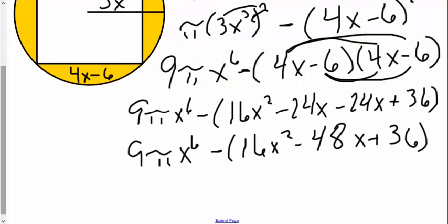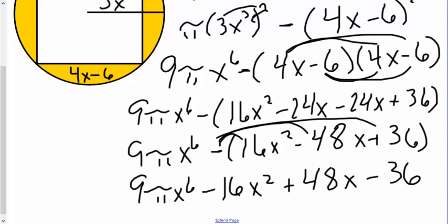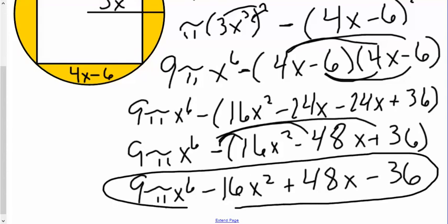Now I just need to distribute my negative, so 9 pi x to the 6 stays, that becomes a negative 16x squared, a positive 48x, and then a negative 36. From here I realize there's no GCF or anything I can factor out, and nothing I can combine either, so this is my final answer. Alright, let's move on to a word problem.